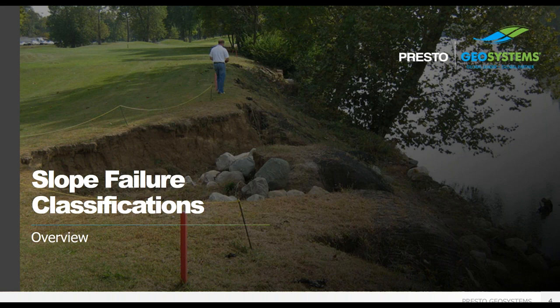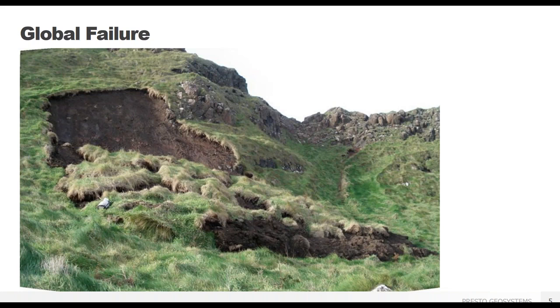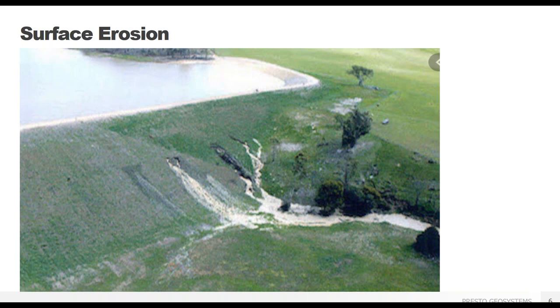We're going to start with a very quick overview of the broad classes of slope erosion. The first and most obvious cause of soil erosion is water. High intensity rainfall events and the resulting runoff can easily strip soil from a slope surface. But global failure can occur when pore pressures elevate and change the properties of soil particles, reducing inner particle strength. Water flowing through the slope, typically in dam embankments or reservoir slopes, can cause erosion through piping.